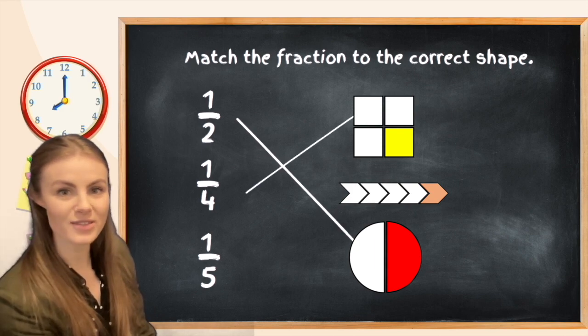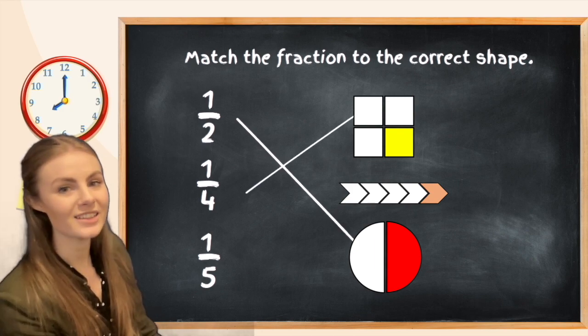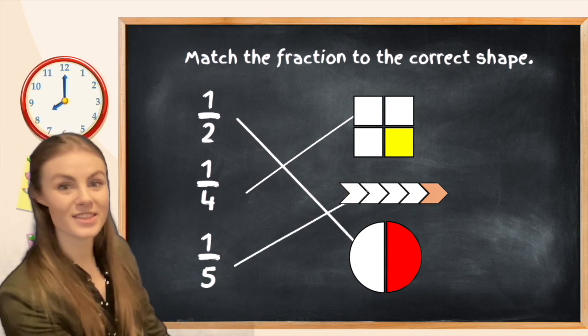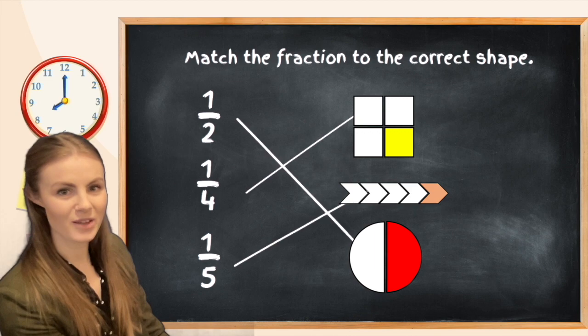We've then got one quarter which needs to match to the square because that's been split into four equal parts. And finally we've got one fifth that needs to match that funny shape in the middle because that has been split into five equal parts.